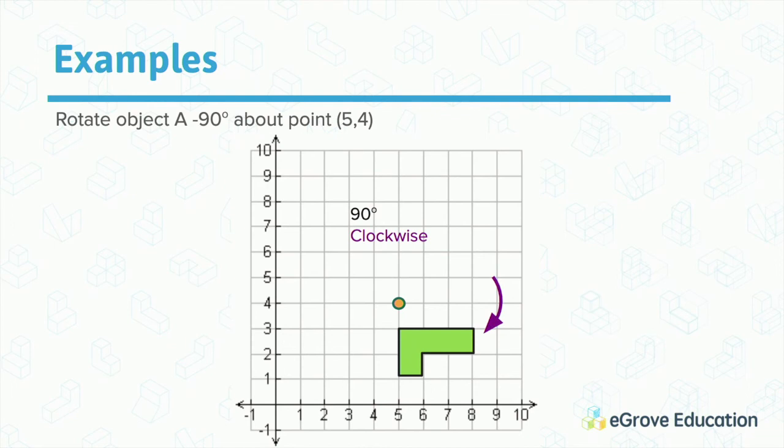What's important to remember is: where is your object? Where's the yellow dot? You have to make sure you are rotating about the yellow dot. If you see that we are about one grid away from the yellow dot, when we start rotating it, we end up one grid away from that yellow dot as well.